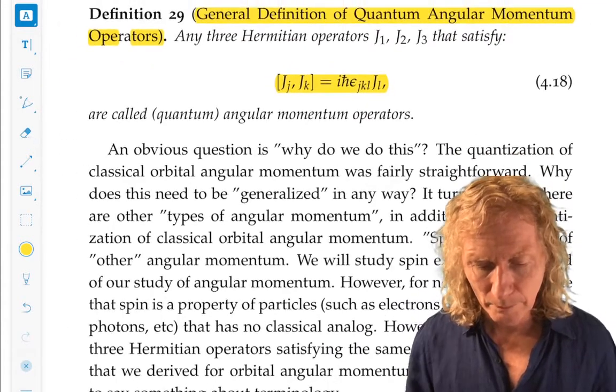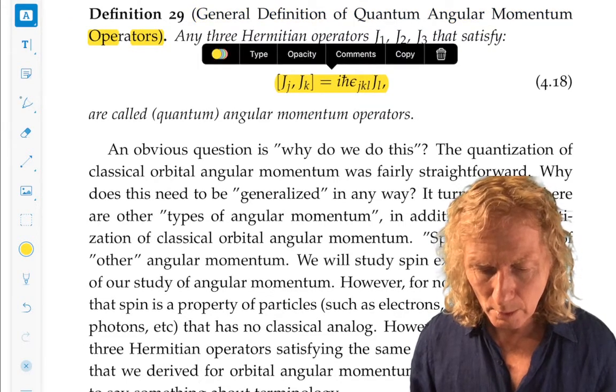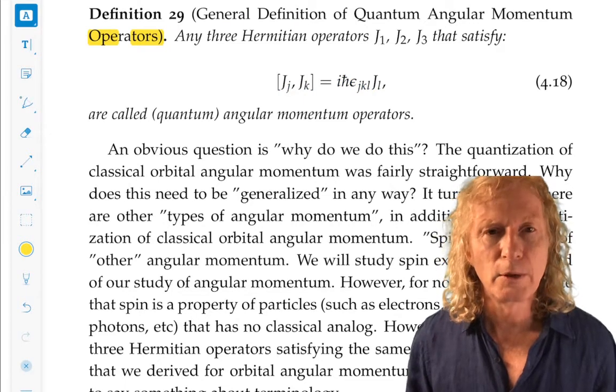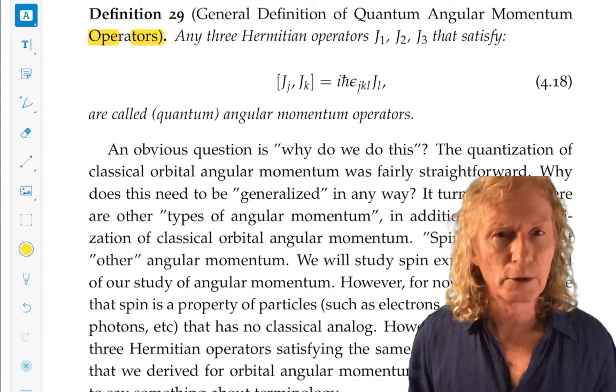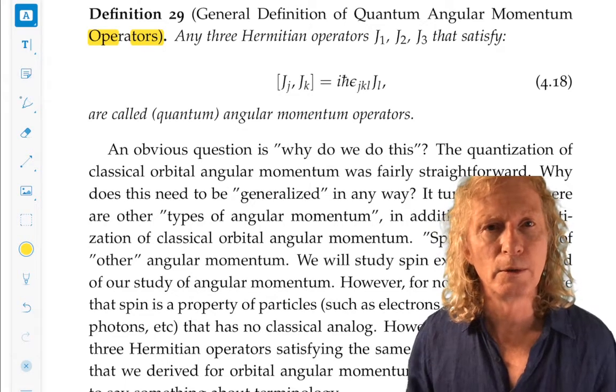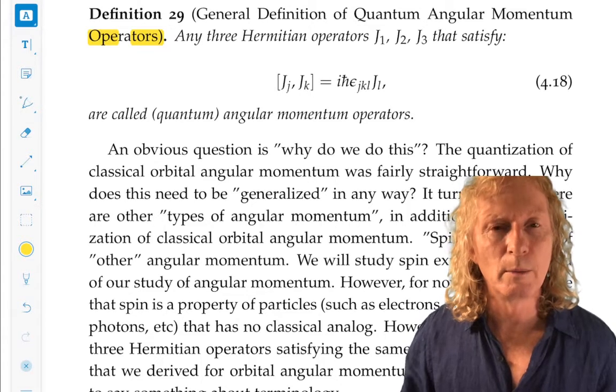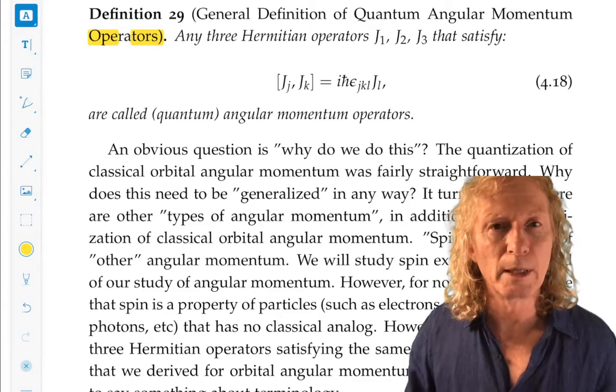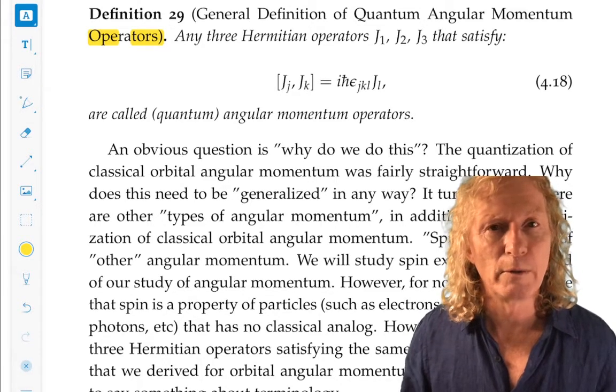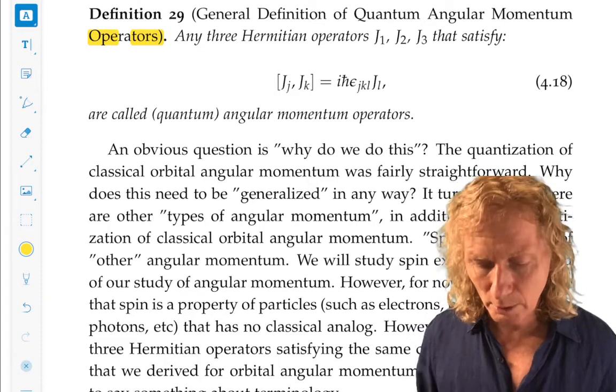But now you can see there's a bit of an issue because angular momentum is a vector. It has three components. And quantum mechanically we would like to observe the quantum mechanical manifestation of that vector, the three operators. But they don't commute.